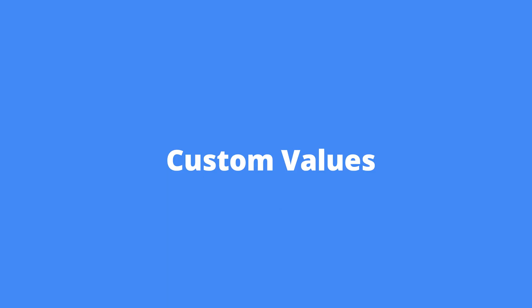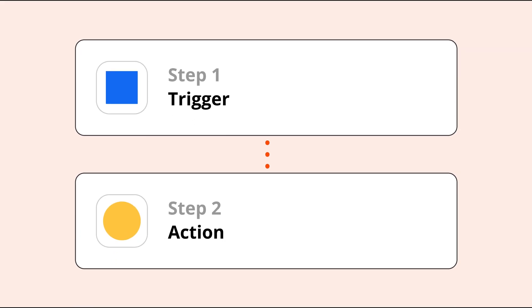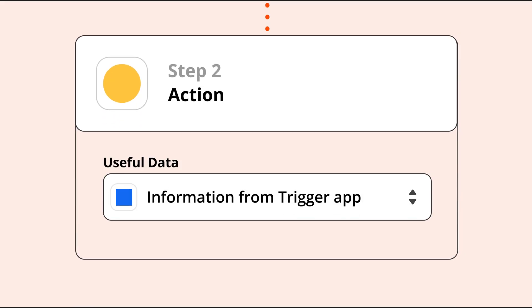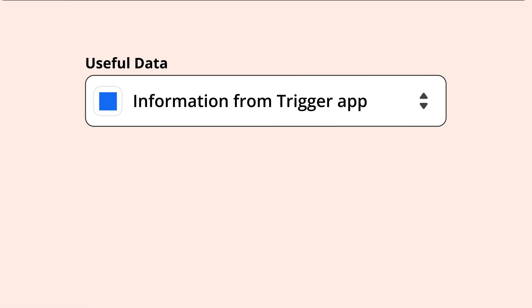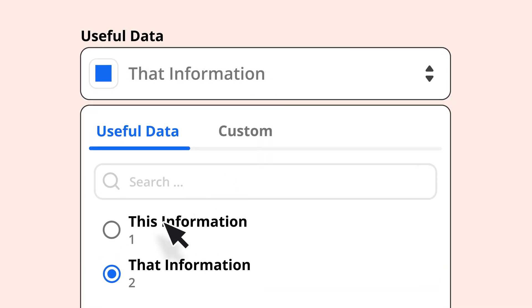Now that you're familiar with the different fields and values inside the editor, let's talk about custom values. Most fields let you pass app information from a previous step in your Zap, but some may be more restrictive and appear as static dropdowns. You can only pick from the options available. By default, these options are static — you pick a value and it stays the same every time the Zap runs. It never changes.